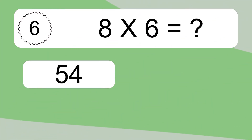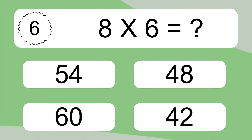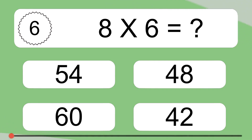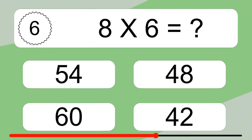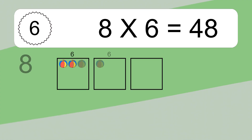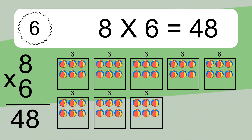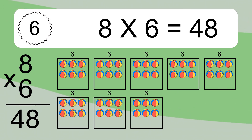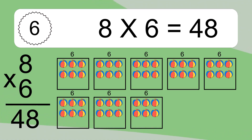8 times 6 equals what? 8 times 6 equals 48. We have 8 boxes, and each box has 6 colorful balls inside. If you count all the balls in all the boxes together, you will have 8 times 6 balls. This equals 48 balls.